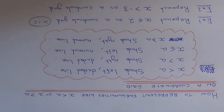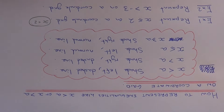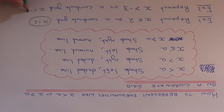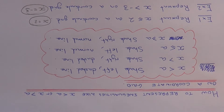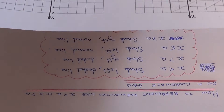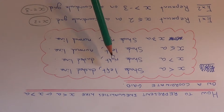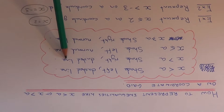So let's move on to example 2. This time we need to represent x is more than minus 3 on the coordinate grid. We just need to think about how we draw the line x equals minus 3 — a vertical line going through the x-axis at minus 3. Since it's more than, we need to do a dashed line and shade to the right.